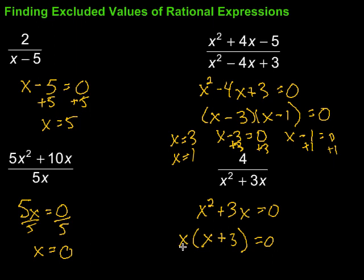Then, zero product property comes in again. If this whole thing is zero, then either this has to be zero or this has to be zero. So I set each of them equal to zero. First one is x equals zero. Nothing else to do with it. Then x plus 3 equals zero. To solve that, I'm just going to subtract 3 on both sides and end up with x equals negative 3. So negative 3 and zero in this case are going to be the things that have to be excluded because they would result in the denominator being zero.